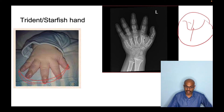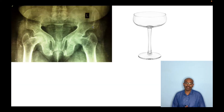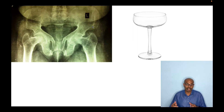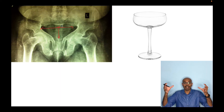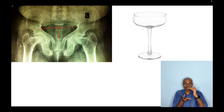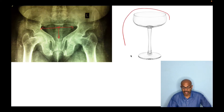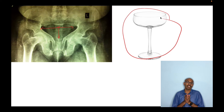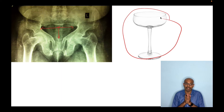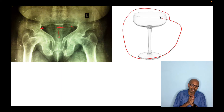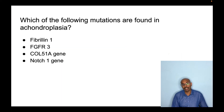The bones are short and stocky with a thick cortex, as seen in the radiograph. The pelvis has a champagne glass appearance — it is wider than it is tall. This causes difficulty in childbirth, and if these patients conceive, a cesarean section is required rather than normal vaginal delivery.